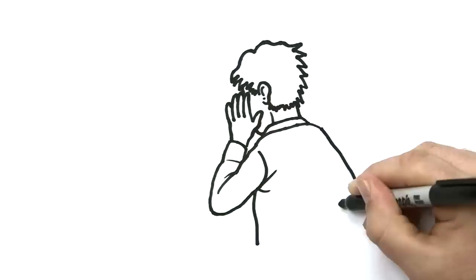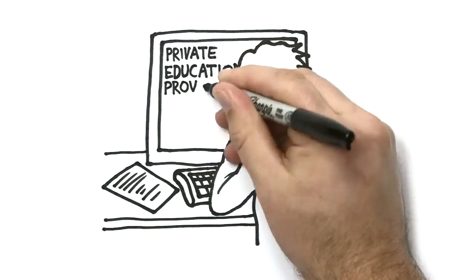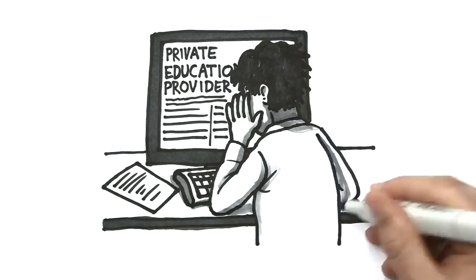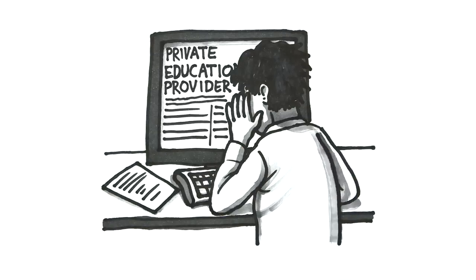Your education provider has to respond to your complaint in writing. If you don't think the answer is fair, then you can appeal their decision to the Overseas Students Ombudsman.